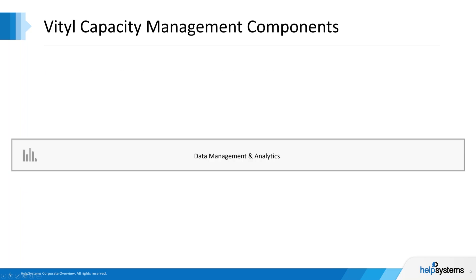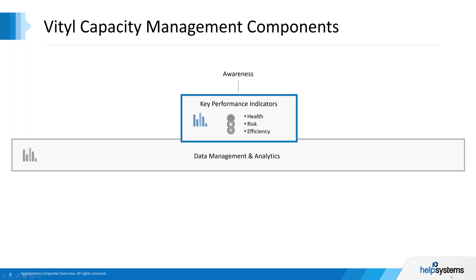What we came up with was a solution made up of a number of different components. We have a component called Key Performance Indicators, which is the one we're going to focus on today. It's a high-level tool that allows you to quickly assess the health, risk, and efficiency of your systems. It's not meant for root cause analysis or providing all the details — it's more about providing awareness to users about certain problems or situations that they should deal with.